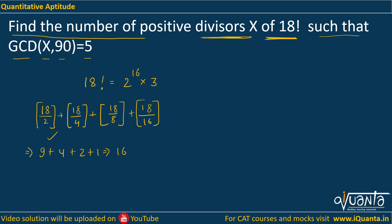Similarly, we find powers of all primes below 18: 3, 5, 7, 11, 13, and 17. The powers of 11, 13, and 17 are each 1. The power of 7 is 2 (from 18/7). The power of 5 is 3, and the power of 3 is 6 + 2 = 8. This completes the prime factorization of 18 factorial.